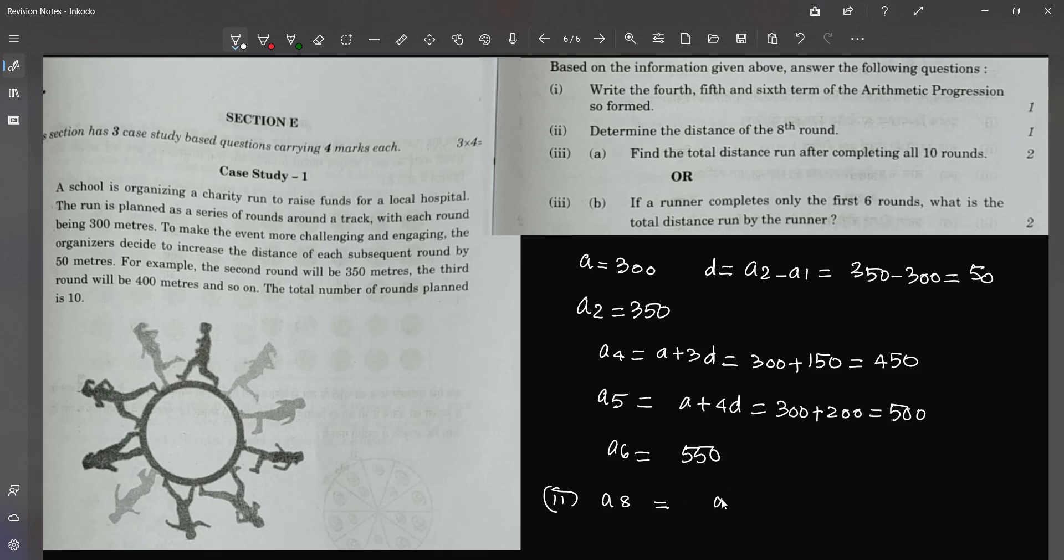So a8 will be a plus 7d. So the answer will be 300 plus 7 times d which is 7 times 50, which is equal to 650. So the answer will be 650.